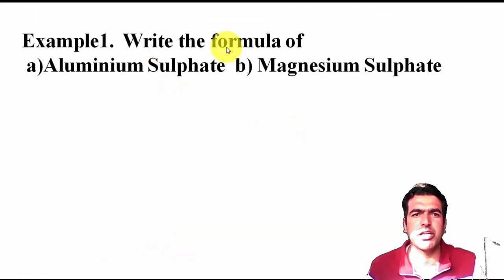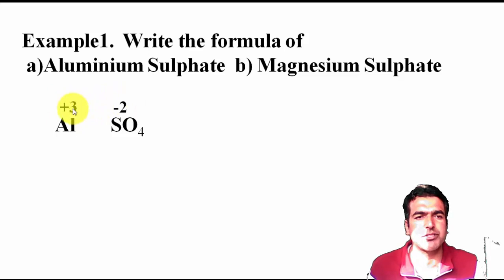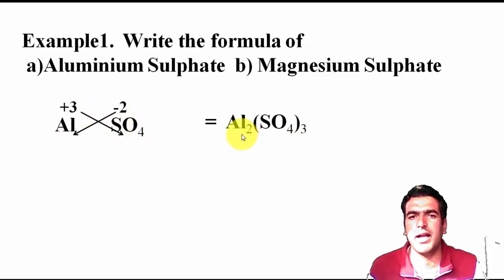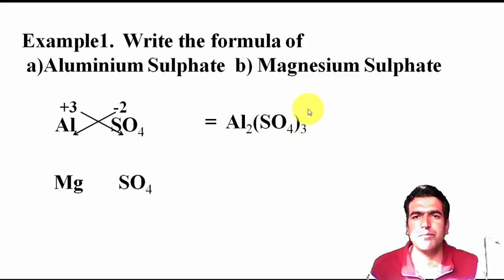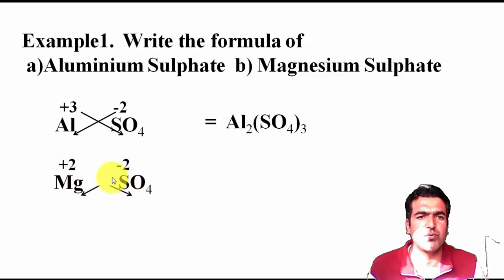Now, the formula of aluminum sulfate and magnesium sulfate. For aluminum sulfate: Al³⁺ and SO₄²⁻. No cancellation possible. Cross the valences — aluminum's charge (3) goes below sulfate, and sulfate's charge (2) goes below aluminum. Formula: Al₂(SO₄)₃. For magnesium sulfate: Mg²⁺ and SO₄²⁻. Here, 2 and 2 cancel, giving Mg₁SO₄₁, which simplifies to MgSO₄.